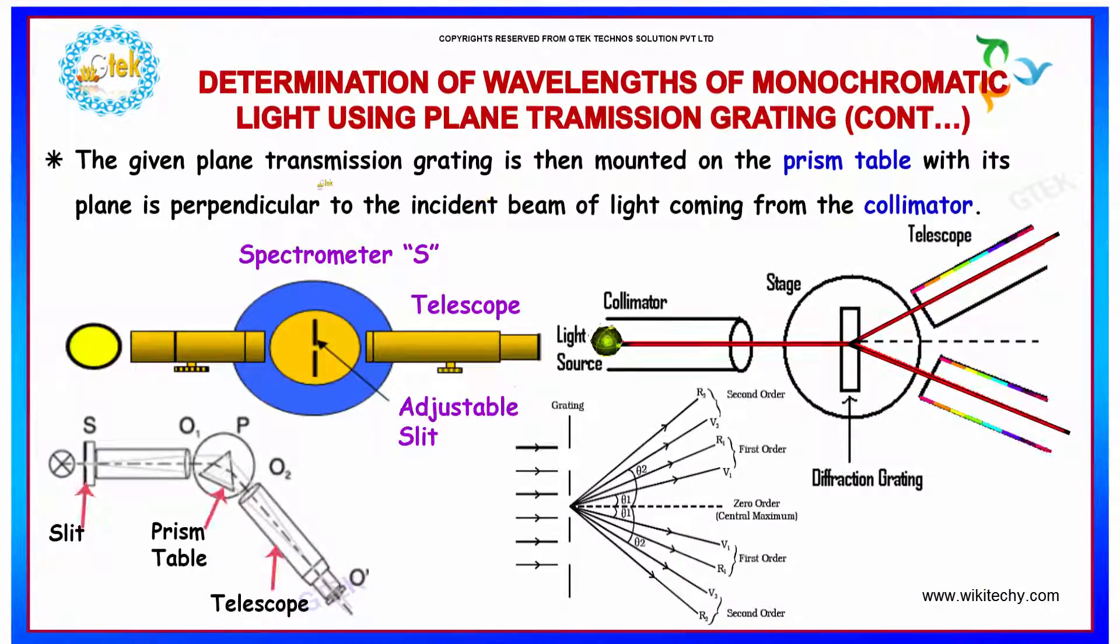The given plane transmission grating is then mounted on the prism table with its plane perpendicular to the incident beam of light coming from the collimator. You got your prism here and from the telescope you are viewing the diffraction grating of the prism.